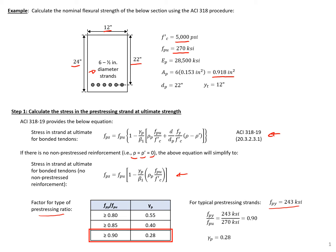This equals about 243 ksi. Taking 243 divided by 270 gives us a ratio of 0.9 and a gamma factor of 0.28.